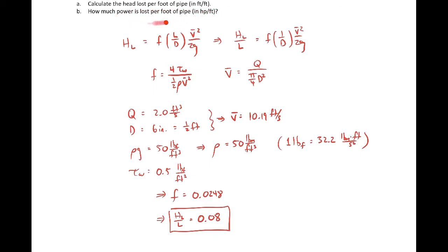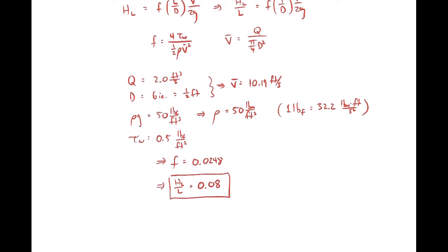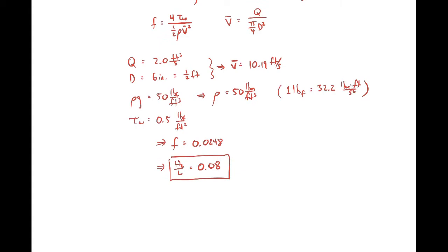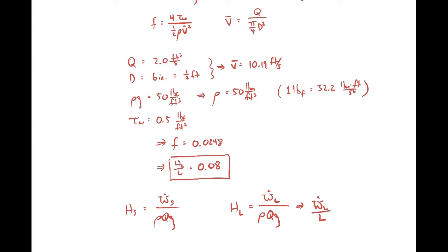Part B asks for the power lost per unit foot of pipe — this is a bit trickier. From the lecture, shaft power is related to shaft head; we can write the same kind of expression for power lost due to viscous effects. Rearranging to find power lost per unit length, we get: rho times volumetric flow rate times gravitational acceleration times the head loss per unit length, which we just calculated.